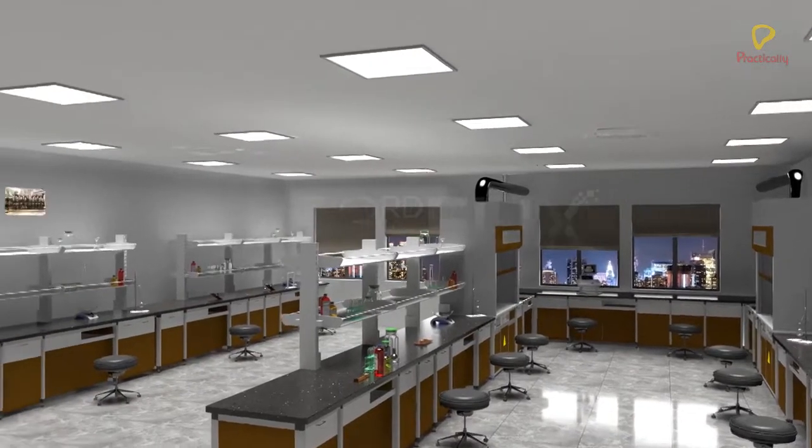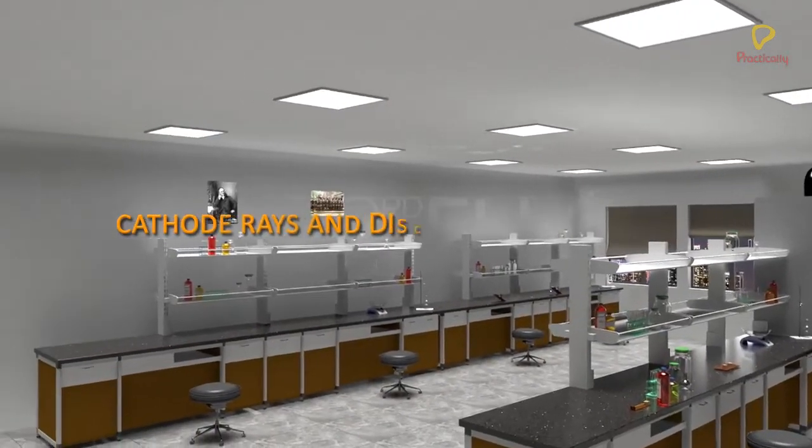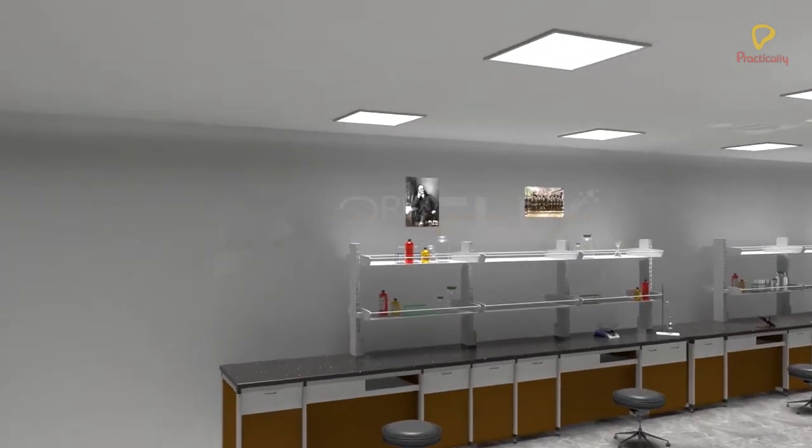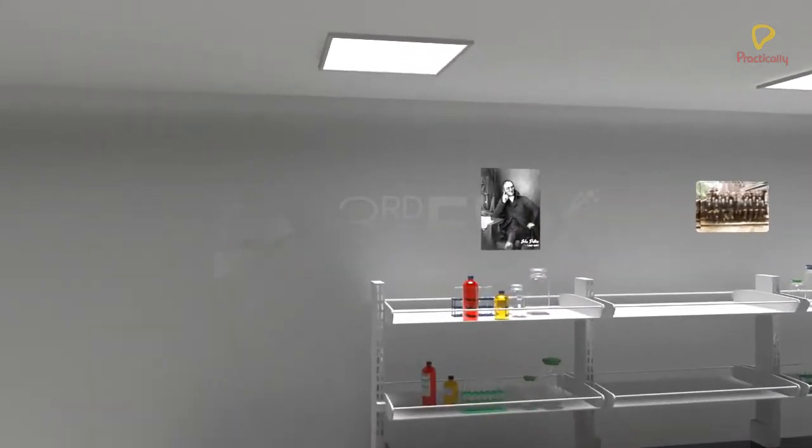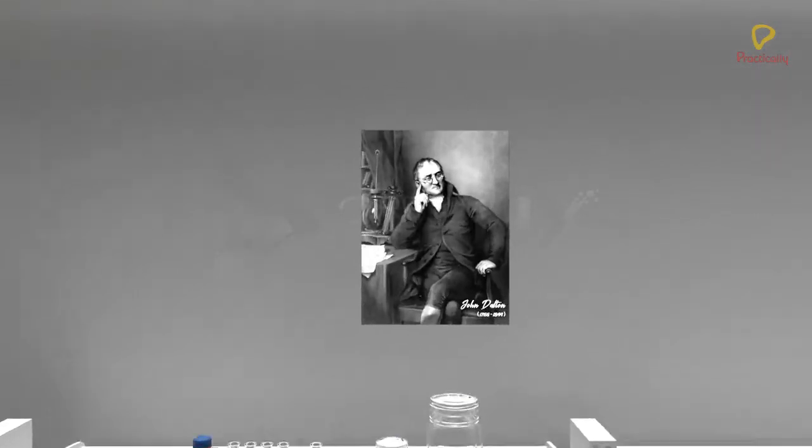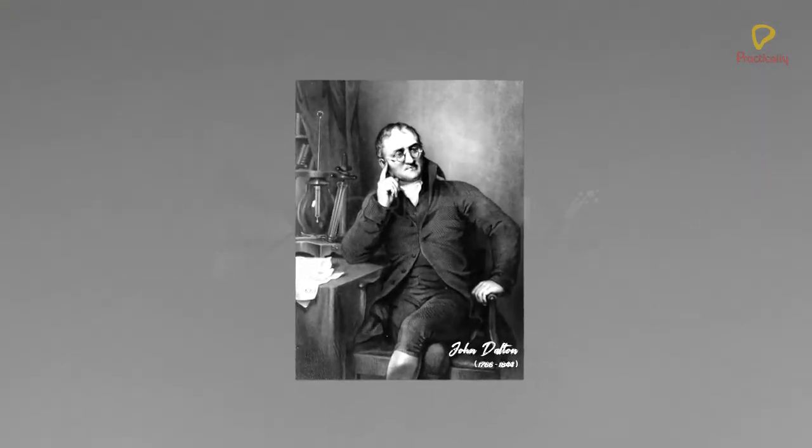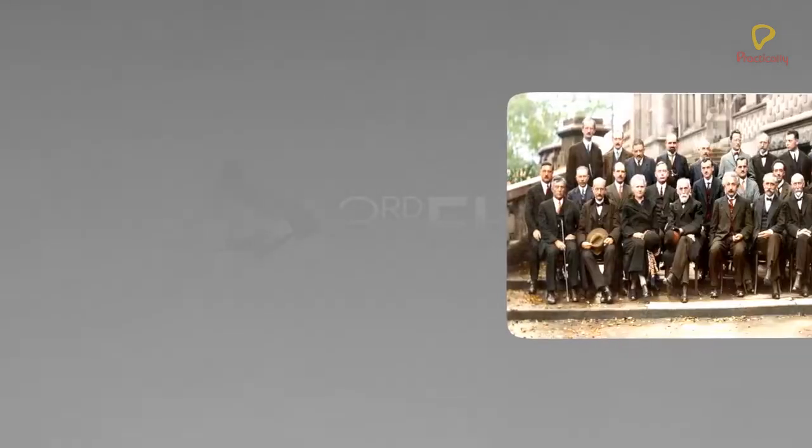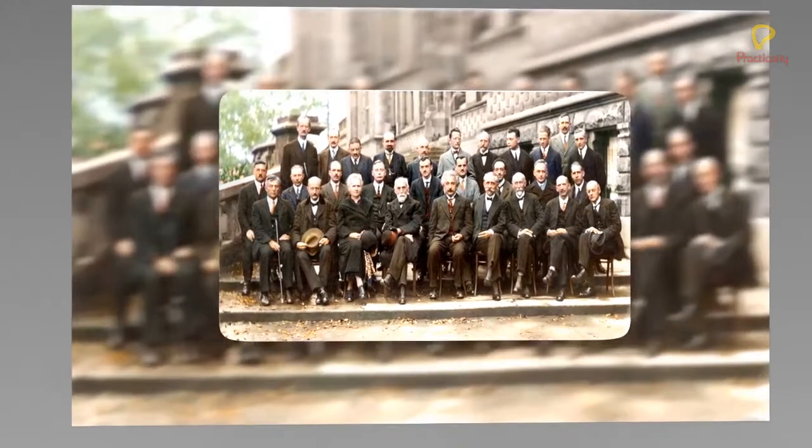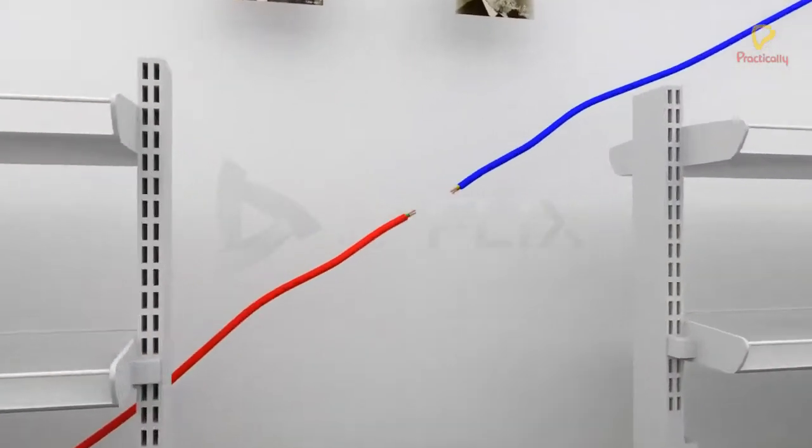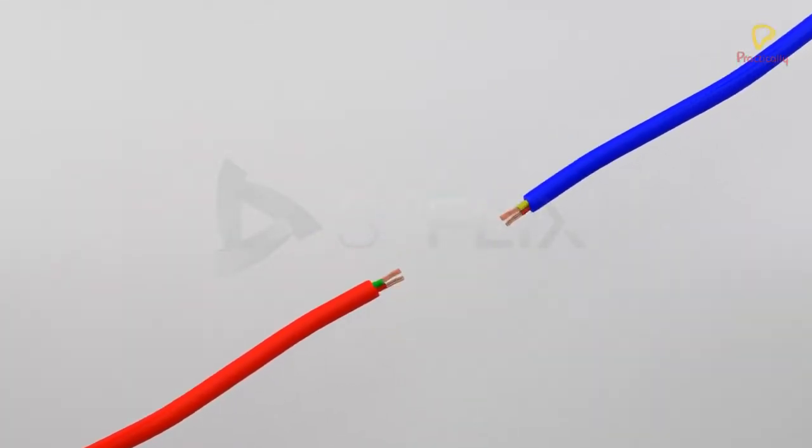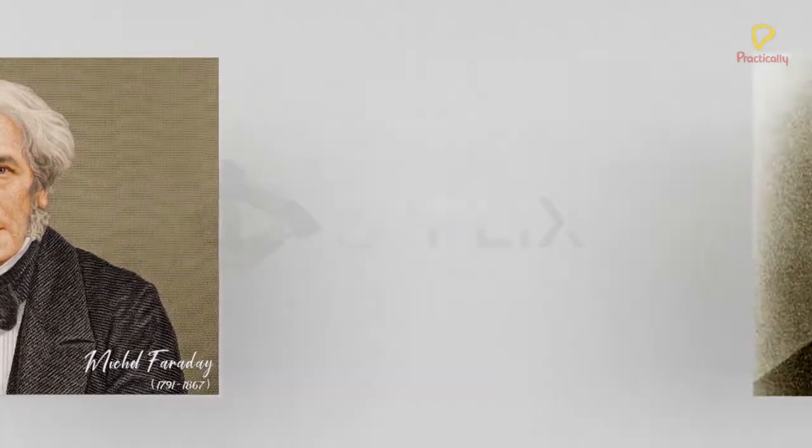The objective is to know about the discovery of cathode rays, their properties, and the discovery of electrons. The atomic theory first put forth by John Dalton could not explain the results of many experiments conducted by scientists between the 19th and 20th centuries. For instance, it could not explain the electrical nature of matter explained by Michael Faraday through his experiments in 1830.